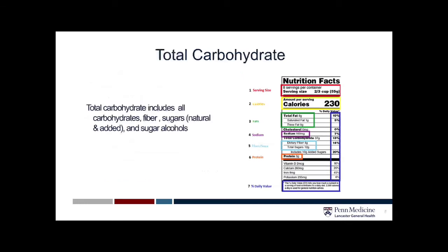The next thing on the food label is carbohydrates. The carbohydrates are listed in bold, as are the fats. Just as we looked at with the fats, the indentation underneath the bold lettering of where it says total carbohydrate indicates the breakdown. The dietary fibers and the sugars are indented, indicating that they are all part of the total carbohydrate content. Looking at this food label, you can see there are 37 grams of total carbohydrate in this food.